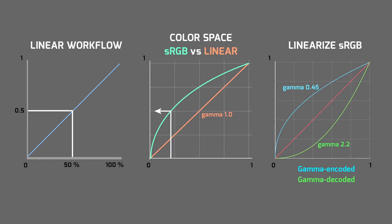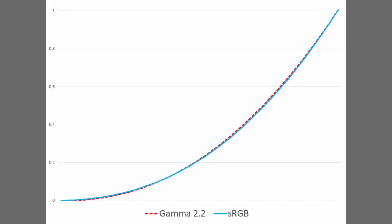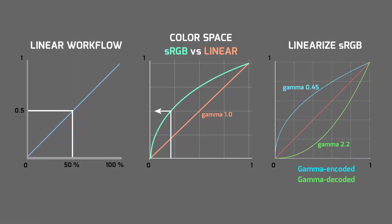Theoretically it means that gamma correction 2.2 is the average number for correction, which is supposed to be a little bit more complex. But as you can see on the curves comparison, these differences are close to minimum, so you do not need to be worried about it.